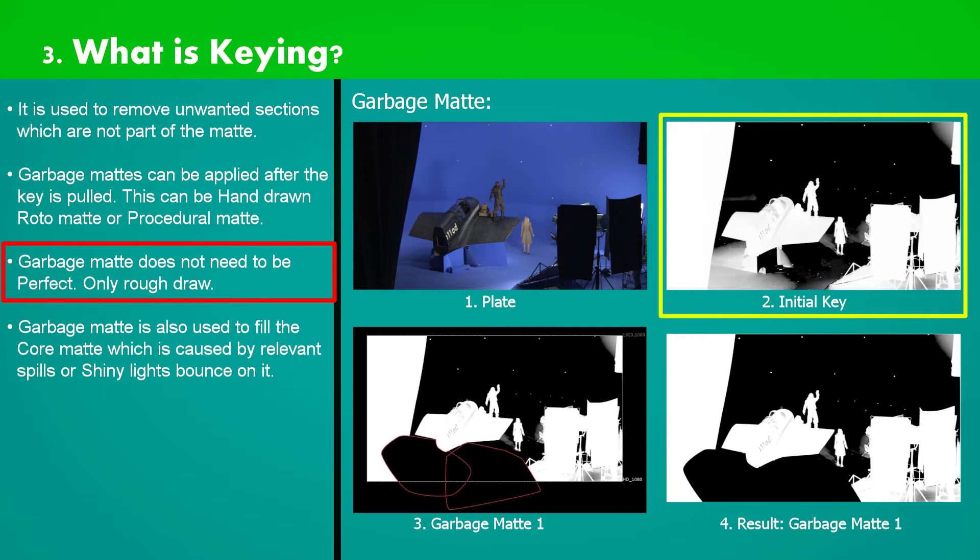This is our extracted key but note that the keyer doesn't fully remove unwanted region, especially in the plane's tail area because of the same lighting and somewhat same color as on the plane. If we force the settings on keyer's operation to remove these unwanted regions, the mat becomes hard and crunchy, and we don't want that.